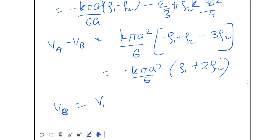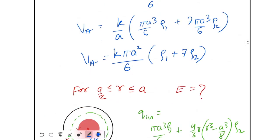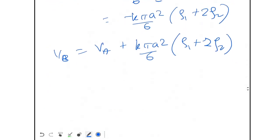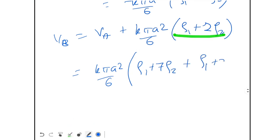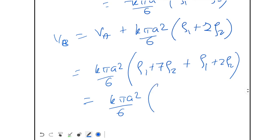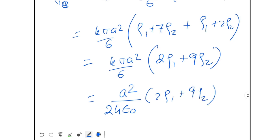Since VA = (Kπa²/6)(ρ1 + 7ρ2), the final answer is VB = (Kπa²/6)(ρ1 + 7ρ2) + (Kπa²/6)(ρ1 + 2ρ2) = (Kπa²/6)(2ρ1 + 9ρ2).